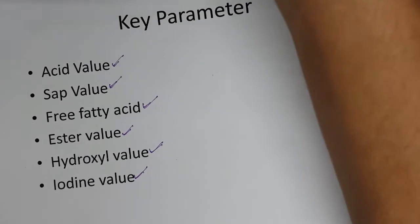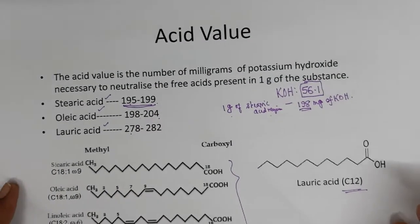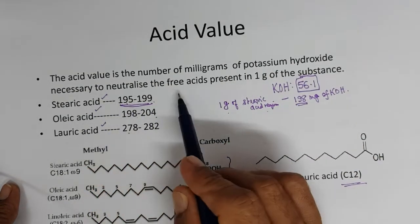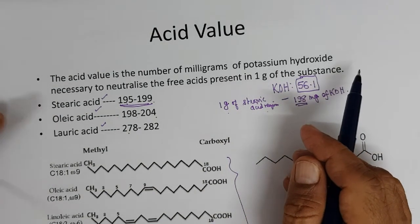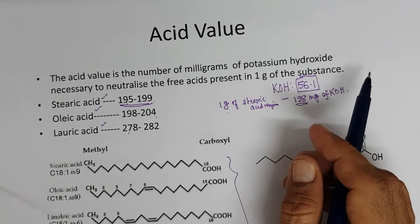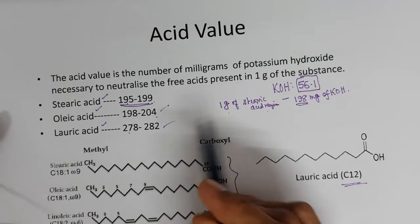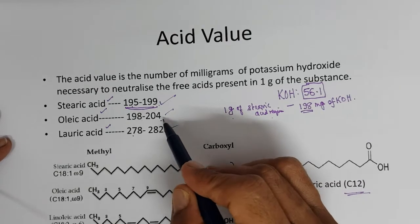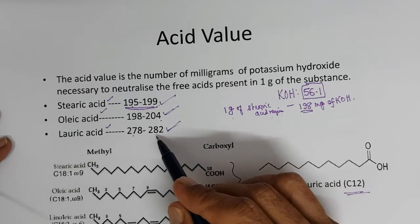First, the acid value. The acid value is the number of milligrams of potassium hydroxide required to neutralize the free fatty acids present in one gram of the substance. For example, stearic acid is a fatty acid — everything there is a free fatty acid. Same way oleic acid, lauric acid. The acid value of stearic acid is 195 to 199, oleic acid 198 to 204, and lauric acid 278 to 282.